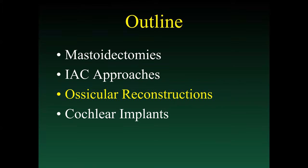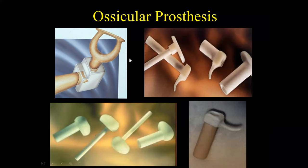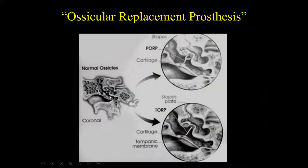The next topic is ossicular reconstructions. Ossicular reconstructions are performed to recreate the normal ossicular chain, which runs from the tympanic membrane to the oval window — comprising the malleus, incus, and stapes. Anytime a process disrupts that mechanical chain, surgeons must figure out how to recreate it. The two primary types of ossicular replacements are the PORP — partial ossicular replacement prosthesis — and the TORP — total ossicular replacement prosthesis.